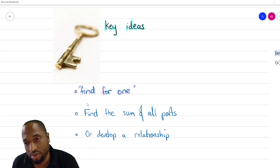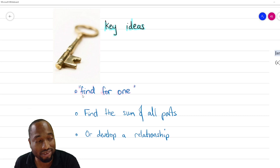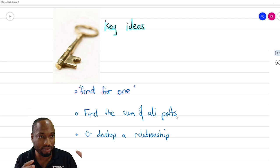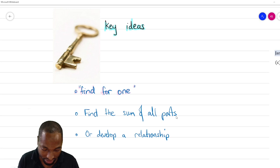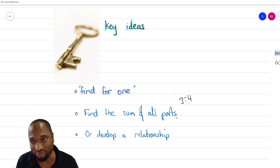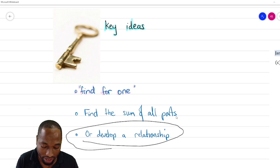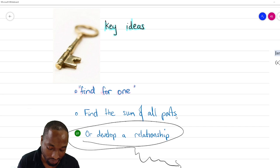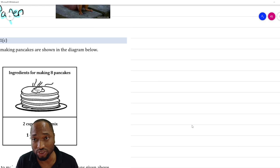The most important key is 'finding for one' — this is really the only key you need. Sometimes you need to find the sum of all parts, like if you see a ratio of three to four that means there are seven parts altogether. Or you may need to establish a relationship. But time and again, you'll see me finding for one. I think we can jump into the past paper questions.